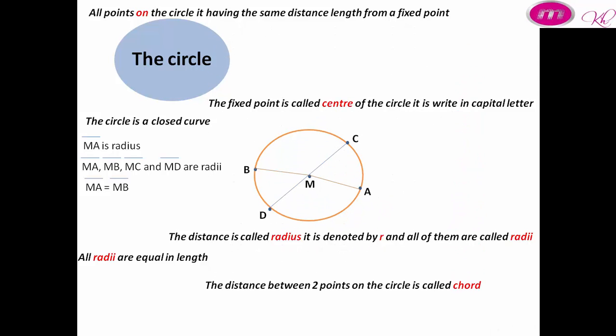The distance between two points on the circle is called a chord. AC is a chord.